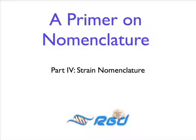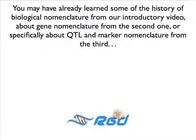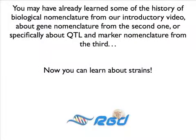This video is the fourth in a series of tutorials on biological nomenclature. The first three videos dealt with the history of biological nomenclature, touched on some reasons why the standardization of nomenclature is important, and gave details about gene and QTL nomenclature. This video covers nomenclature of rat strains.